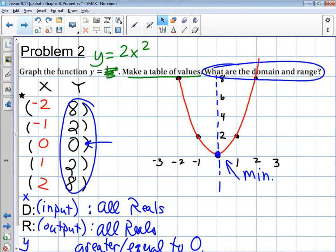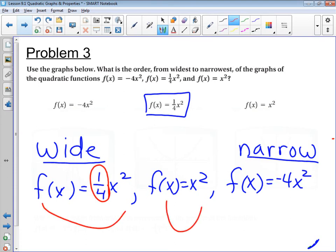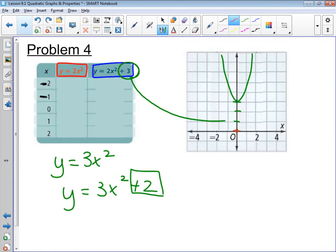To graph a parabola, or graph a quadratic function, you make a t-table, and graph the points. And when you're comparing parabolas, when you're comparing quadratic functions, the smaller the number in front of the x squared term, the wider it is. Wide, skinny, skinnier. And finally,